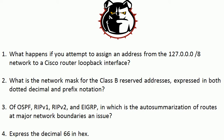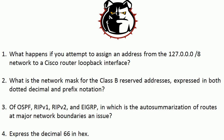What is the network mask for the Class B reserved addresses? In dotted decimal, that's going to be 255.240.0.0, and in prefix notation that's simply /12. If you're not used to prefix notation, it's just a number behind the slash indicating the number of consecutive ones at the beginning of the mask. It's a lot easier than continually writing 255.255.255.0.